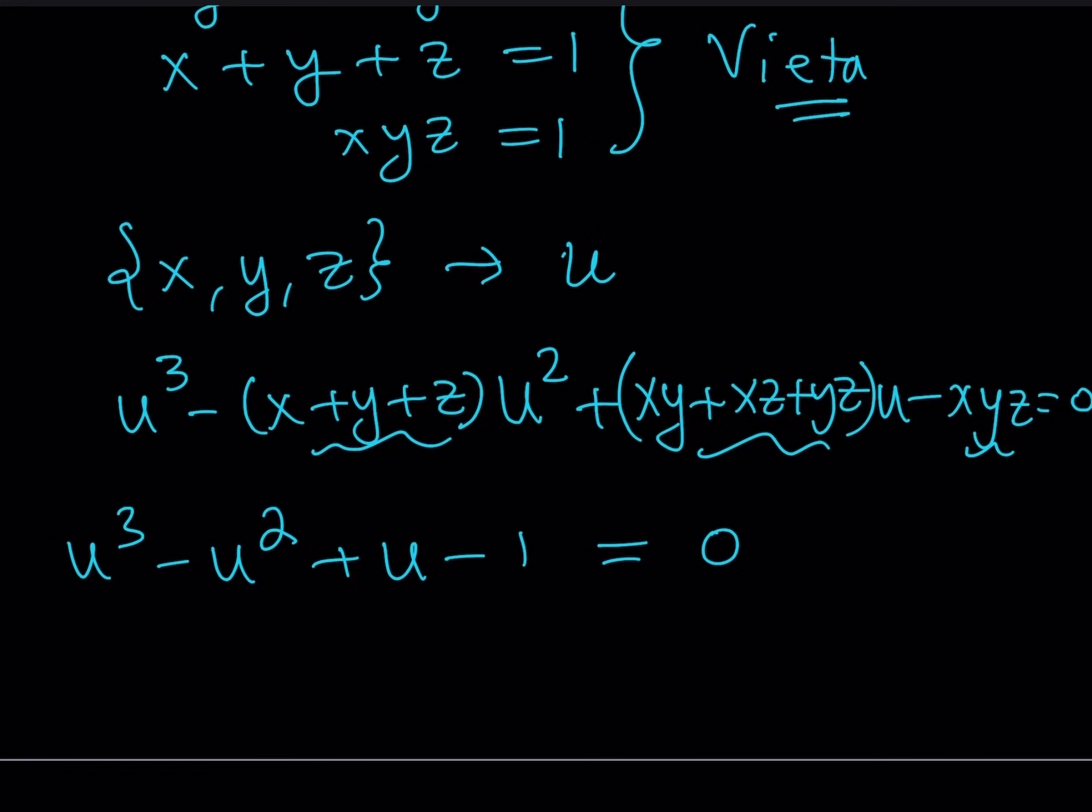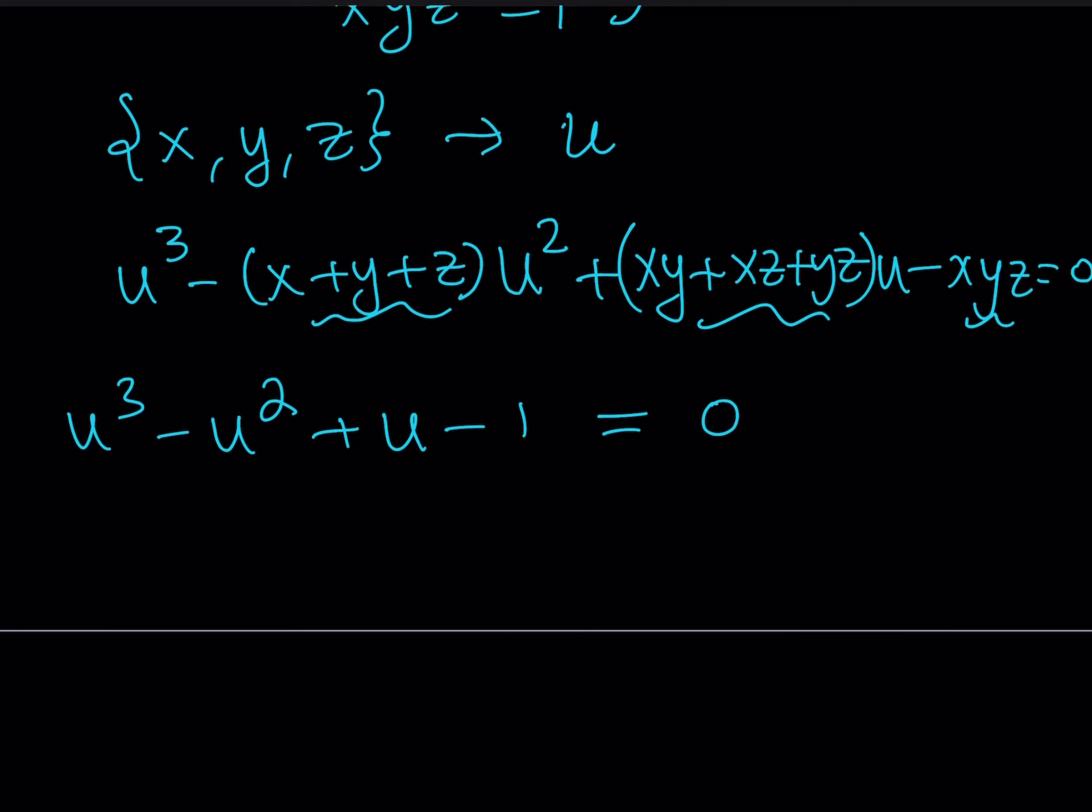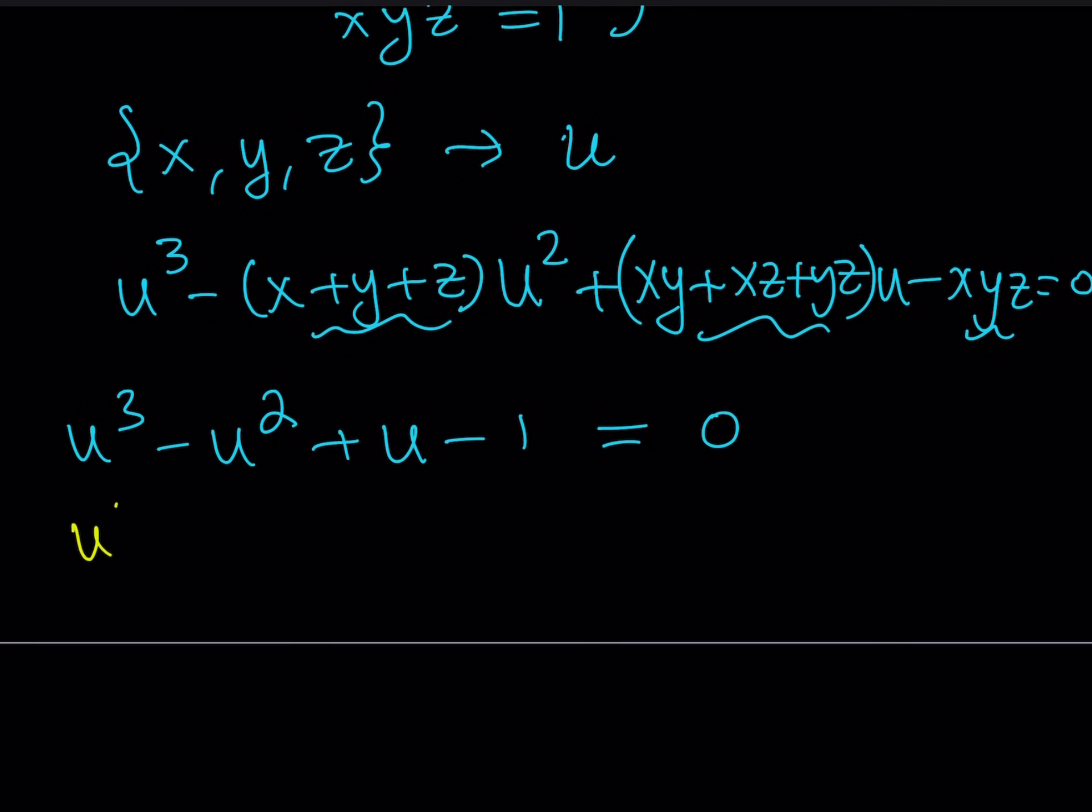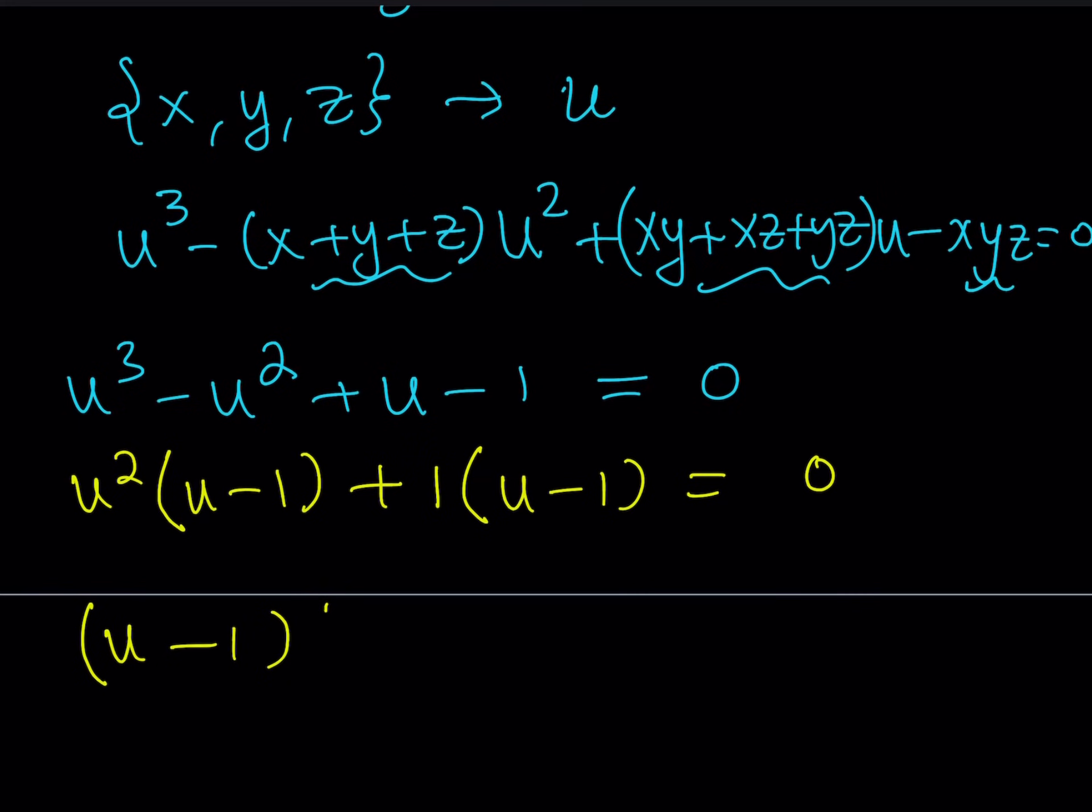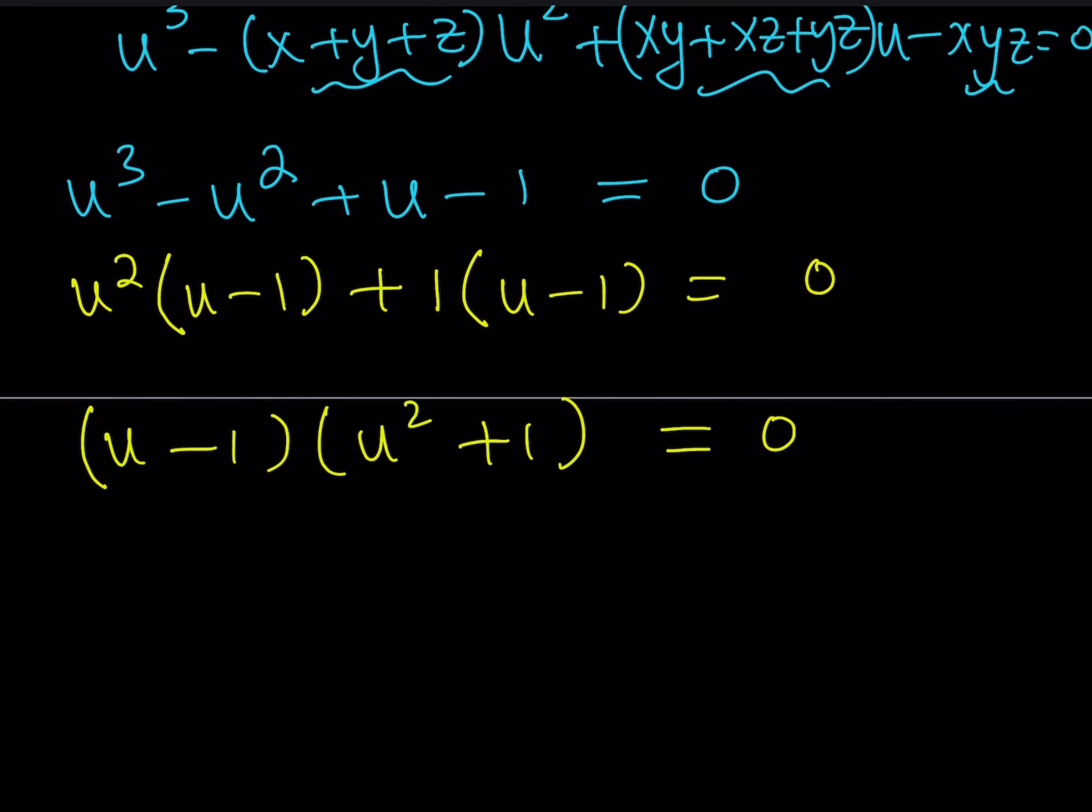Are we going to use the cubic formula? No. We're just going to use factoring because this is so simple. I take out U squared, I get U minus 1. I take out 1, I get U minus 1. So I can take out U minus 1. And this gives me U squared plus 1. Now, I was able to factor my cubic so I can solve it. I get U minus 1 is equal to 0. From here, I get U equals 1. From the second factor, I get U squared plus 1 is equal to 0, which means U squared is equal to negative 1.